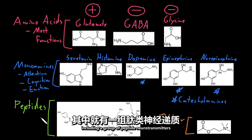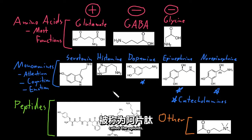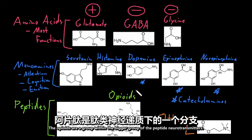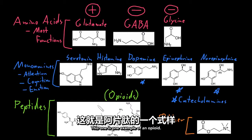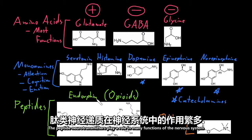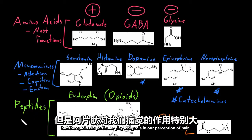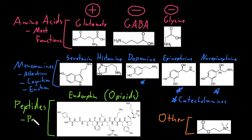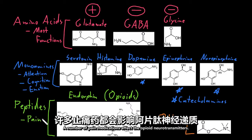There are many important peptide neurotransmitters, including a group called the opioids. The opioids are a subgroup within the peptide neurotransmitters — endorphin is one example of an opioid. The peptide neurotransmitters play a role in many functions of the nervous system, but the opioids in particular play a big role in our perception of pain, and a number of pain medications affect the opioid neurotransmitters.